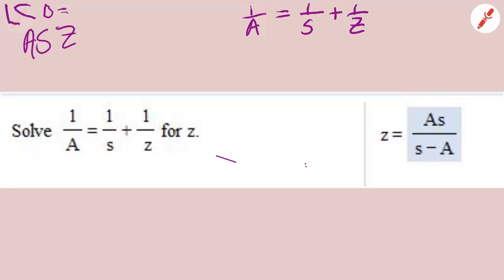I'm going to multiply both sides of the equation by A, S, Z times 1 over A. And since 1 over A is a fraction, let's make A, S, Z a fraction by putting it over 1. This is going to equal A, S, Z times 1 over S plus 1 over Z.